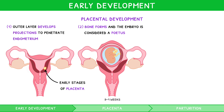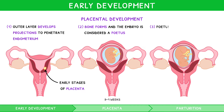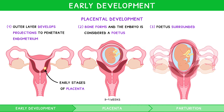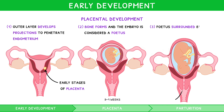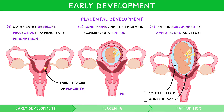Once large enough, the fetus is surrounded in a membrane known as the amniotic sac, which fills with amniotic fluid to protect it from damage.